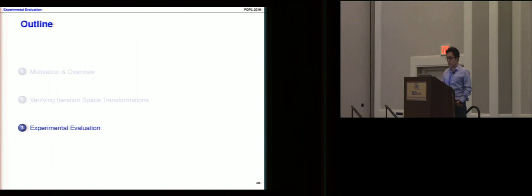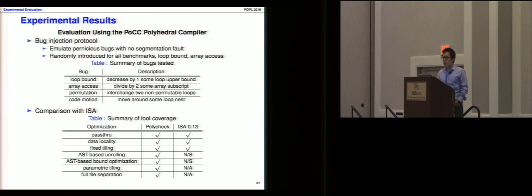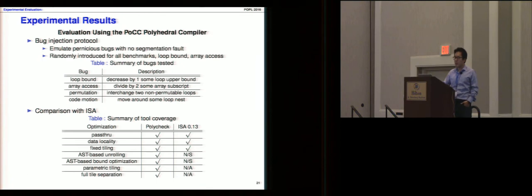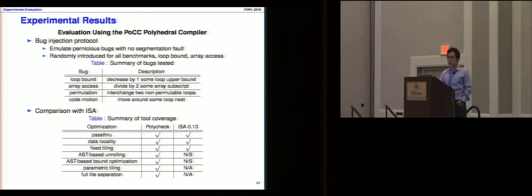Now I would like to introduce the experimental evaluation. We evaluate our approach using several different compilers. First, we evaluated using the polyhedral compiler collection, injecting bugs into transformed programs based on a protocol. We introduced four categories of bugs randomly — relating to loop bounds, re-indexing, permutation, and code motion. Our tool has wider coverage of compiler bugs than ISA2.